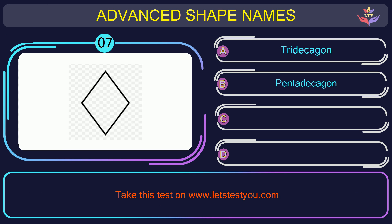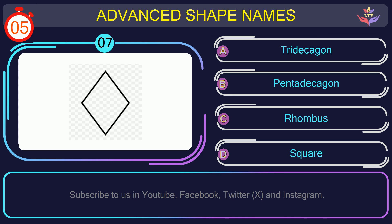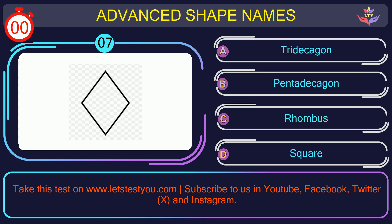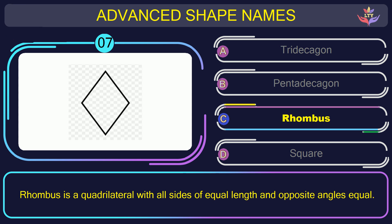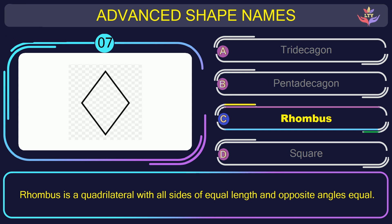Question number seven. Find the name of the shape in this picture. The correct answer is option C. Rhombus. Rhombus is a quadrilateral with all sides of equal length and opposite angles equal.